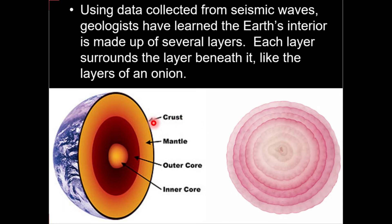From the information collected about the earth, we know that the very outer surface is the crust, beneath the crust there is the mantle, and the most inner part is known as the inner core. We can divide the earth into three parts: crust, mantle, and core.